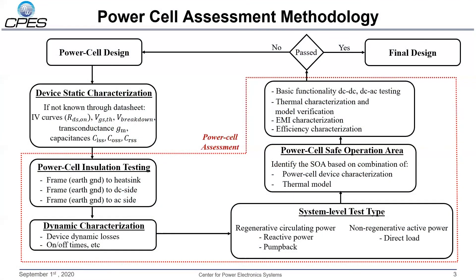The mission of the assessment methodology is to characterize the capabilities of the power cell as well as to explore its limitations. The first step is insulation testing, investigating maximum differential and common-mode voltage insulation capabilities of the power cell. This work was introduced by USU and Joshua Stewart in previous sections. Following that, the system level test type will be determined, after which the safe operating area will be defined. The SOA will be defined based on device characterization and a thermal model, so the thermal limit of the power cell at different conditions is known. Subsequently, a series of continuous tests are conducted to verify thermal management, dv/dt transient immunity, and efficiency performance. At the end, a decision will be made to determine whether the power cell design should be iterated. If passed, the power cell design is complete.